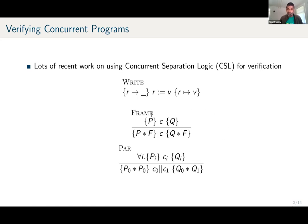One of the main distinctive features of this logic is a structural rule called frame. This rule is the essence of modular reasoning in separation logic. It says: if I have a triple PCQ — meaning I can safely run C in a state satisfying P and end in a state satisfying Q — then I can also run C in an extended state where there is some additional separate resource F. C will transform the P-part to Q while leaving the frame F unchanged.